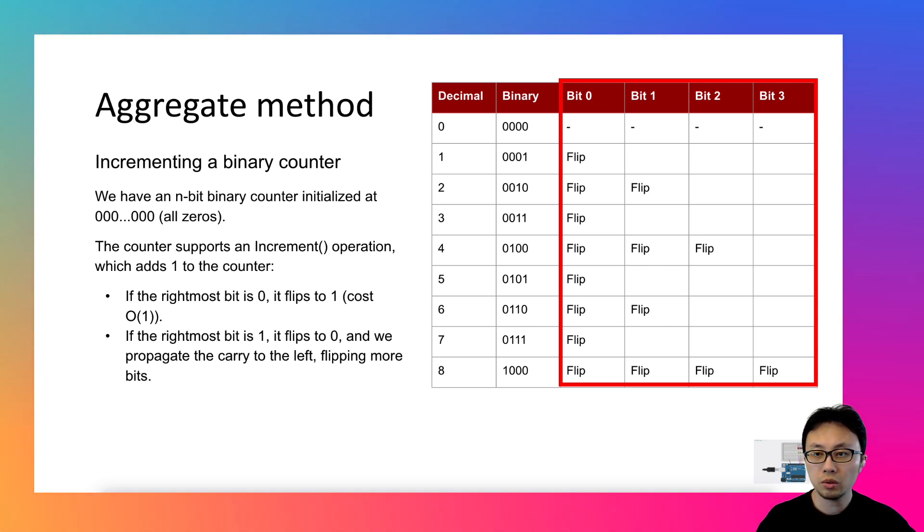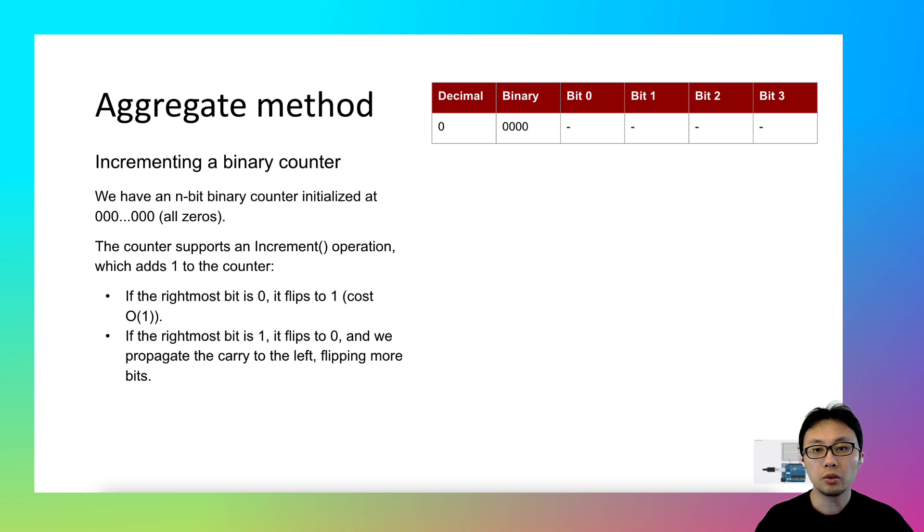So bit 0 represents the rightmost bit, and bit 3 represents the leftmost bit. The first row is the starting point with all 4 bits as zeros.